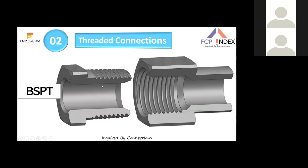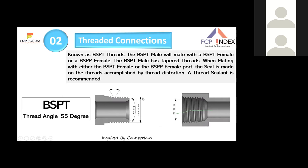BSP-T (tapered) features a tapered thread. The BSP-T male can mate into a BSP-T female or a BSP parallel female port. The seal is made on the threads through thread distortion — there is no separate seating surface. A thread sealant is recommended. The thread angle is again 55 degrees.